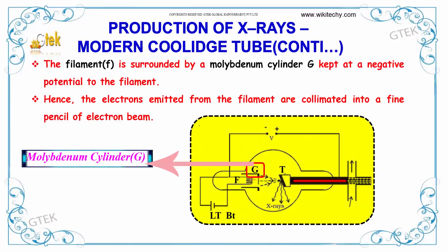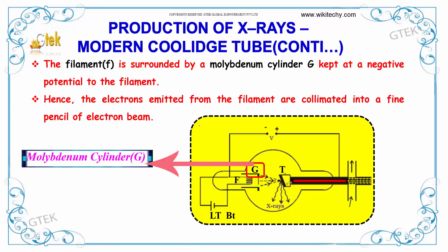The filament F is surrounded by a molybdenum cylinder G, which is kept at a negative potential relative to the filament. As a result, the electrons emitted from the filament are collimated into a fine pencil beam. This is the molybdenum cylinder.